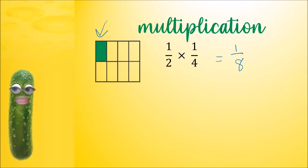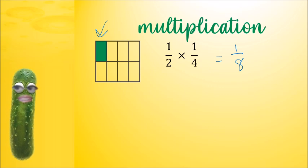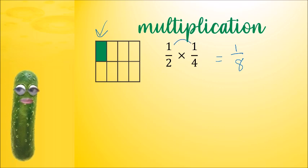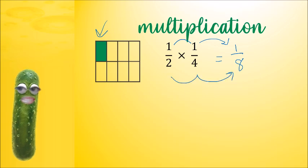How do we get that? How do we get 1 over 8 from all these numbers? 1 times 1 is 1, and 2 times 4 is 8.